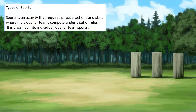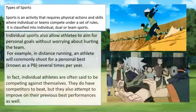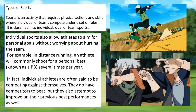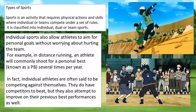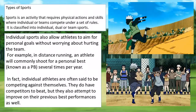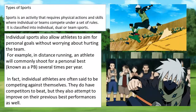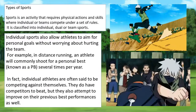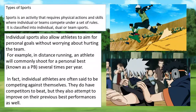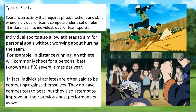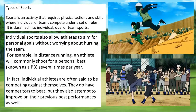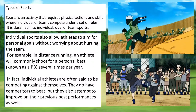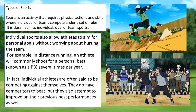Types of sports. Sports is an activity that requires physical actions and skills where individuals or teams compete under a set of rules. It is classified into individual, dual, or team sports. Individual sports allow athletes to aim for personal goals without worrying about hurting the team. For example, in distance running, an athlete will commonly shoot for a personal best, known as a PB, several times per year. In fact, individual athletes are often said to be competing against themselves — they do have competitors to beat, but they also attempt to improve on their previous best performances.